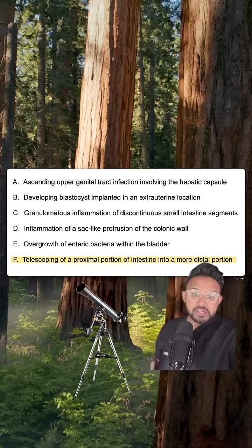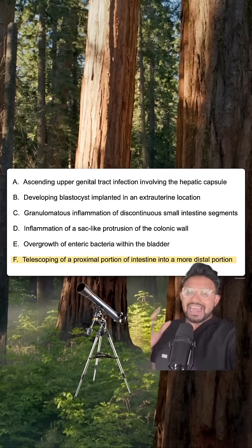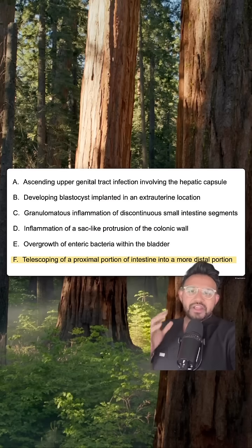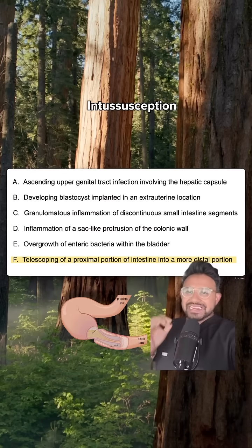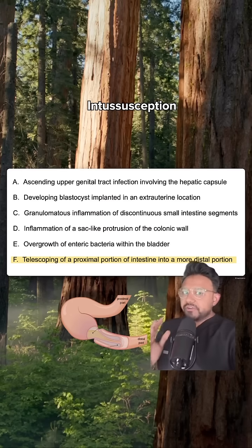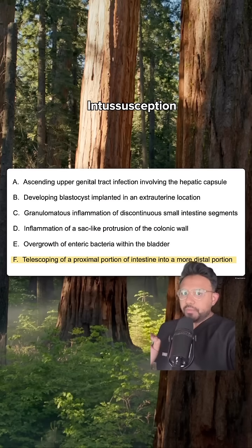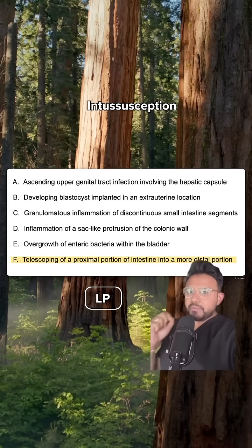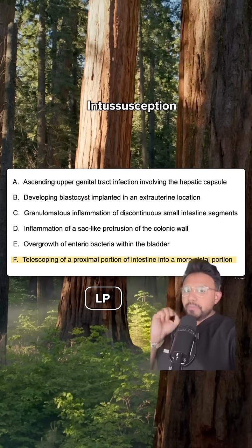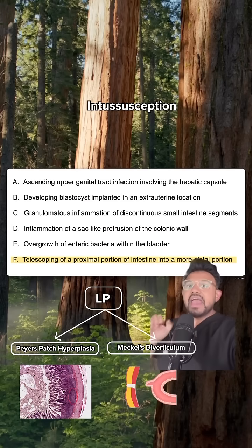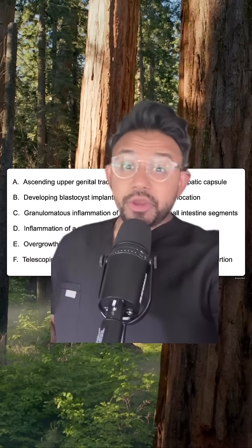And finally: telescoping a proximal portion of intestine into a more distal portion — this is very classic for intussusception. Whenever you see intussusception with colicky abdominal pain, you need to say two words: lead point. The two major lead points are going to be Peyer's patch hyperplasia as well as Meckel's diverticulum.